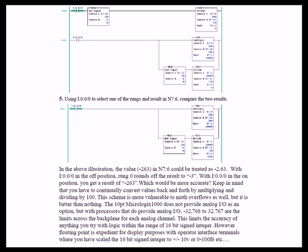Now the 10-point MicroLogix 1000 does not provide any analog I/O as an option. But with processors that do provide analog I/O, you are still limited. That is, with 16-bit backplanes, you are still limited to signed integer minus 32,768 to a positive 32,767. These are limits across the backplane for each analog channel. And this is going to limit the accuracy of anything you try to do with logic within the range of 16-bit signed integer.